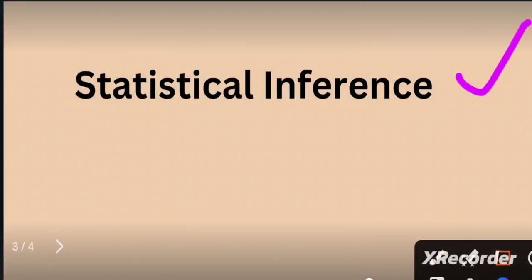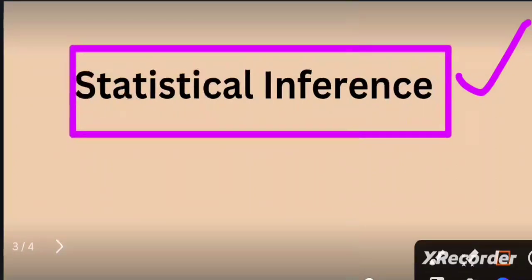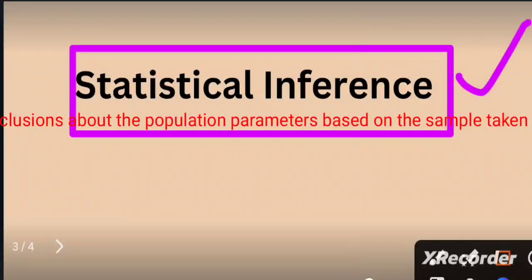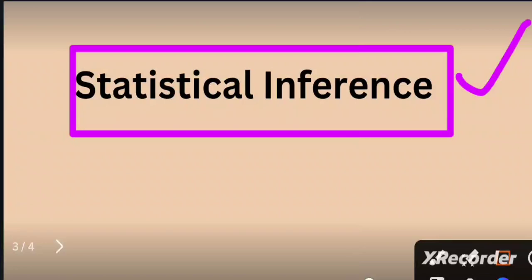There are mainly three ideas underlying statistical inference. First, a sample is likely to be a good representative of the population. Second, there is an element of uncertainty as to how well the sample represents the population. Third, the way the sample is taken matters.